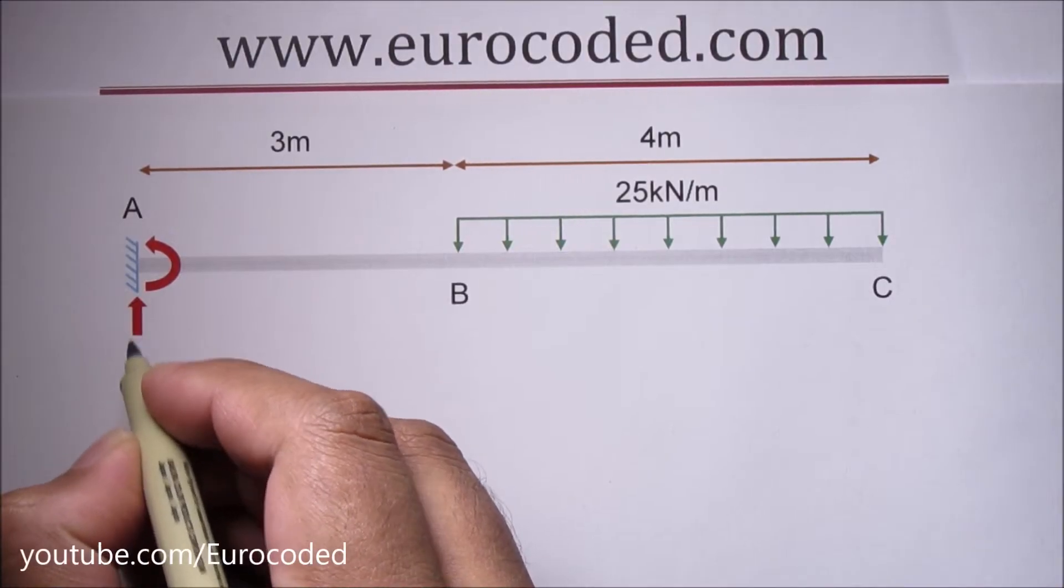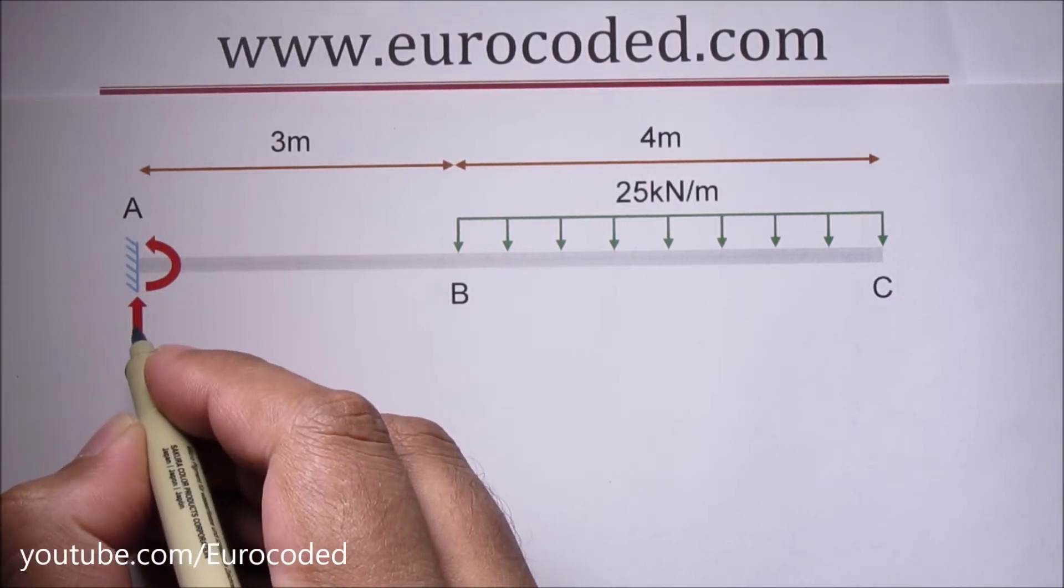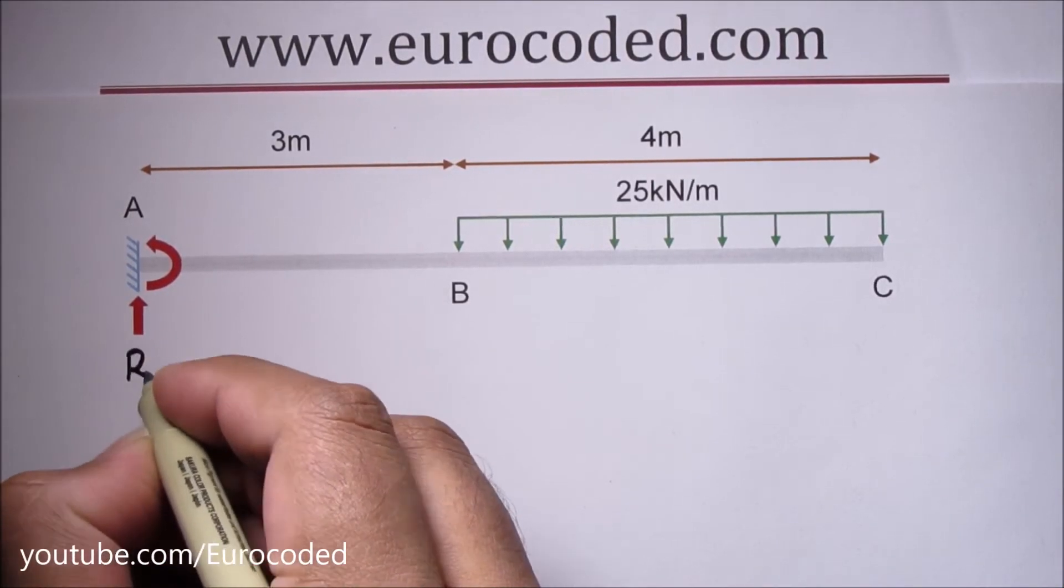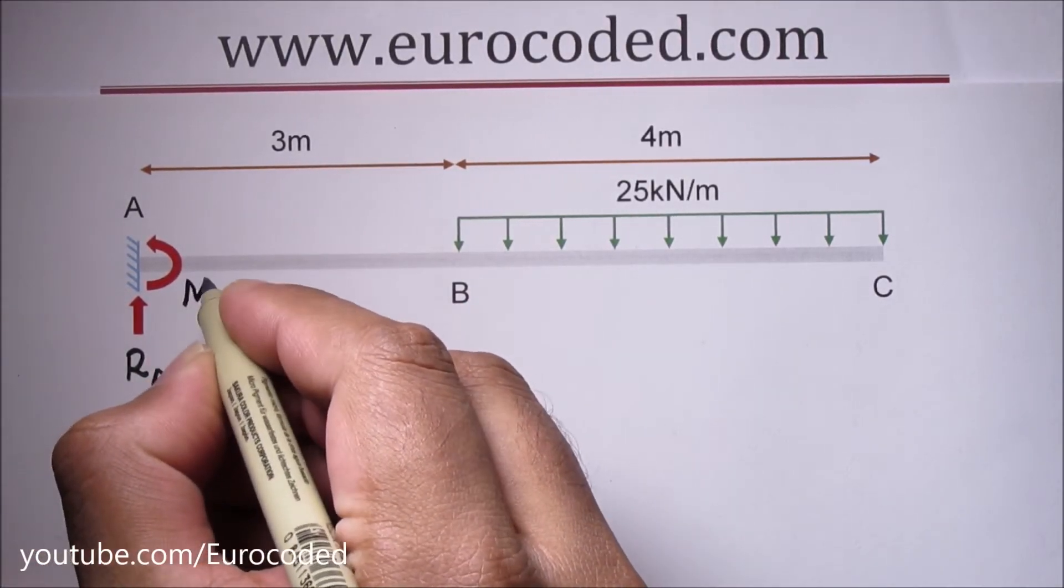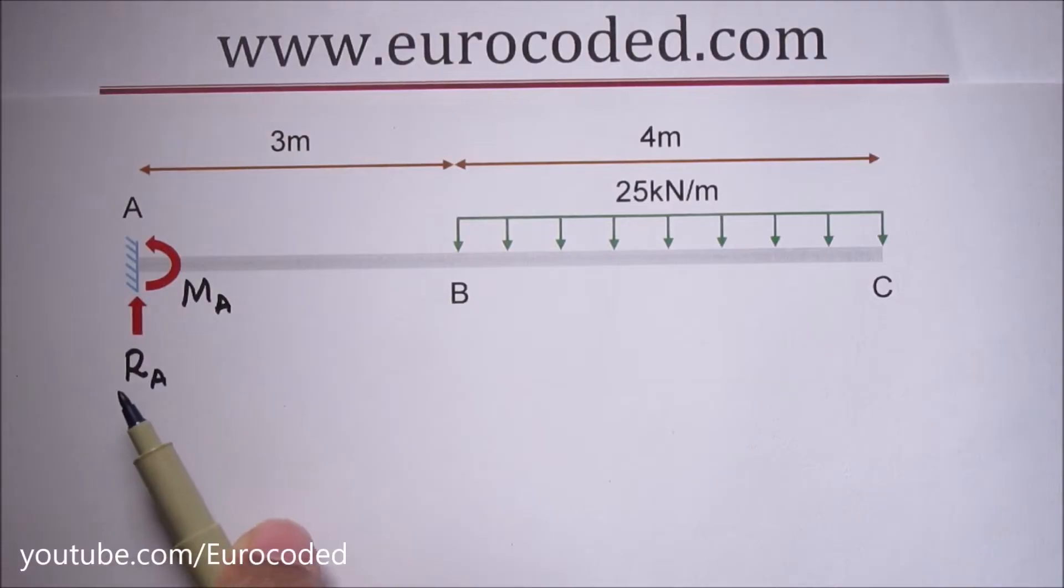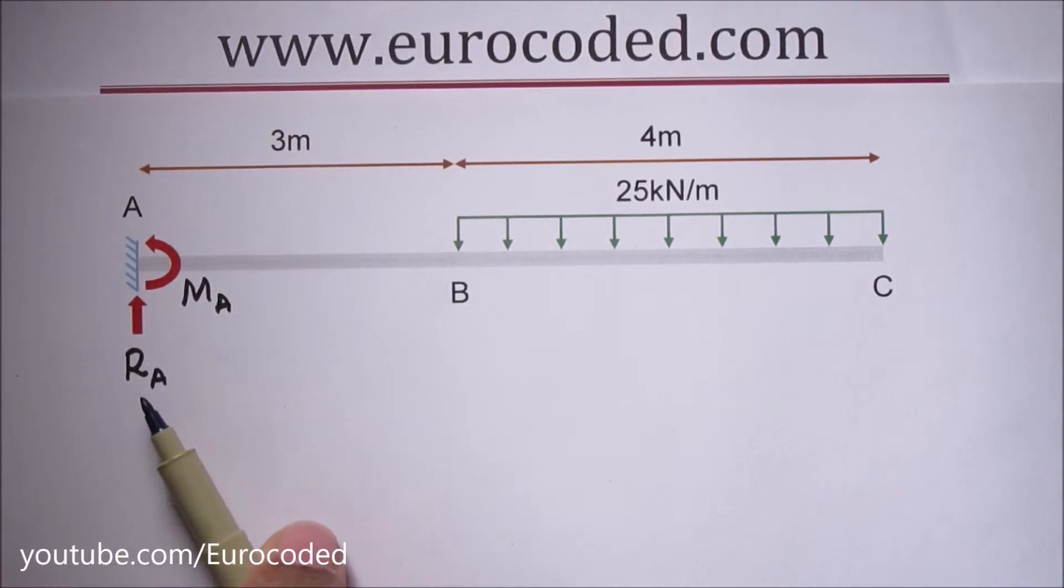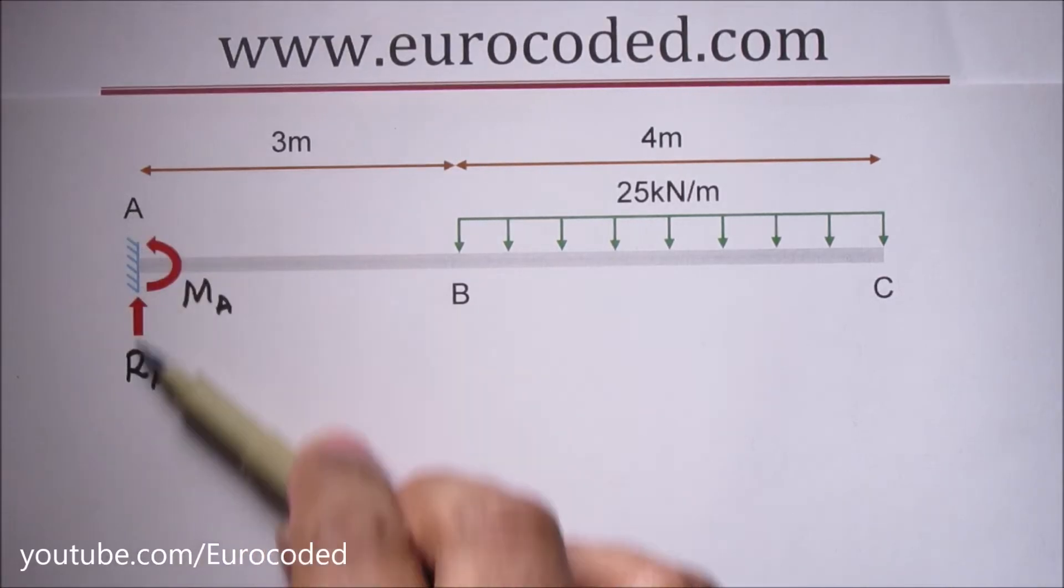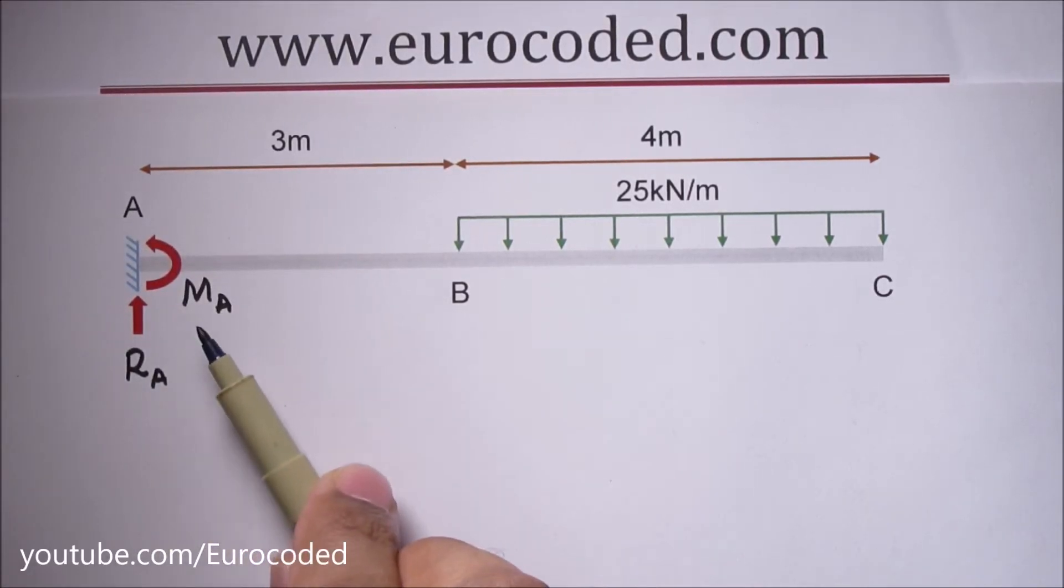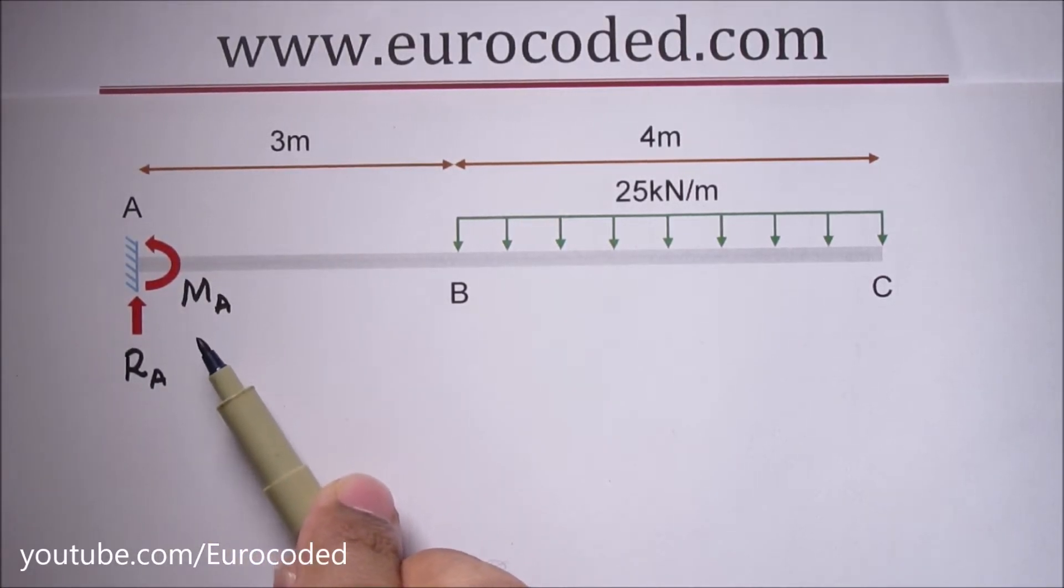I'm going to call this vertical reaction at this fixed support RA and the bending moment MA. Now we can determine RA by looking at vertical equilibrium in this direction and MA by looking at moment equilibrium.